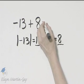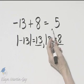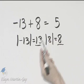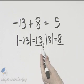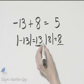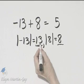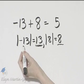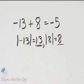13 minus 8 is 5, and we keep the sign of the number with the larger absolute value. This is the larger absolute value — it is originally negative 13 — so my sum is negative 5.